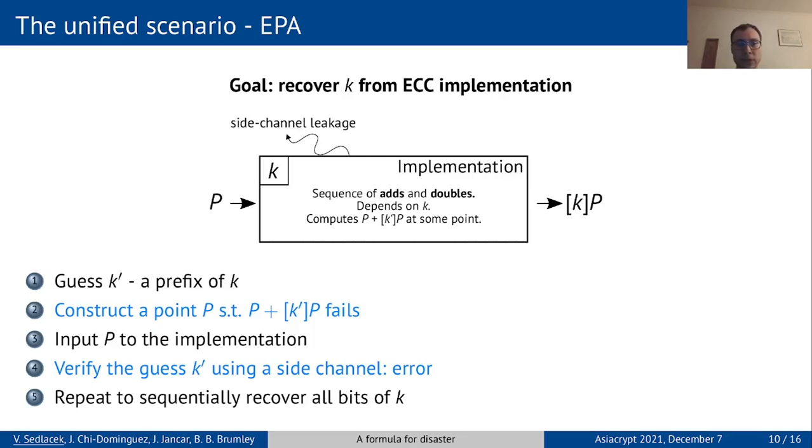But even if there are no exceptional points and EPA does not apply, we can perform a slight variation to obtain ZVP, which can actually also be seen as a generalization of RPA.